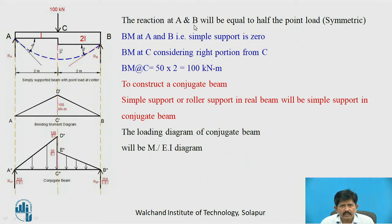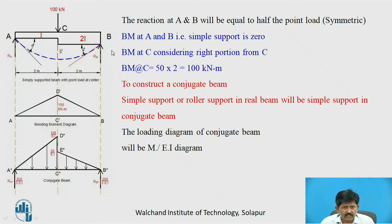The reaction at A and B will each equal P by 2 (50 kN) due to symmetric loading. The bending moment at C, considering the right portion, is RB into distance equals 50 into 2 equals 100 kN·m.